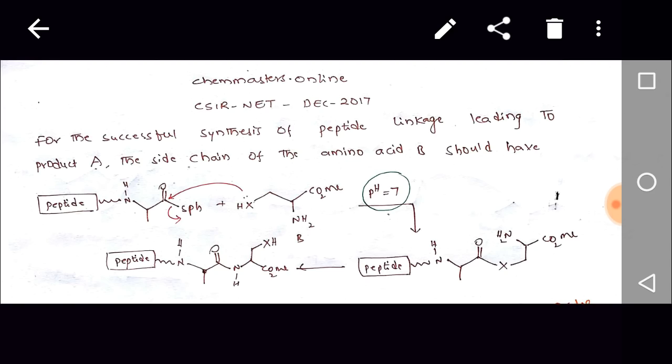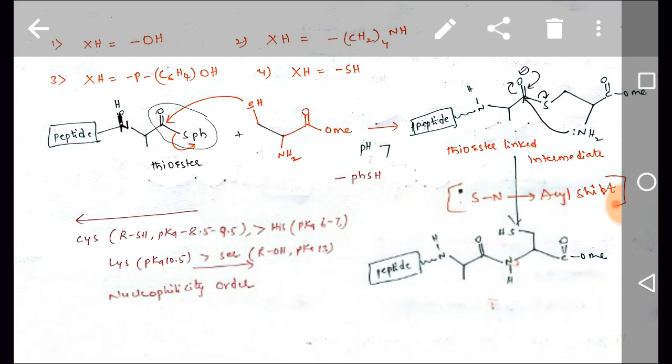We need to find that X in the given options. The first option has OH in the place of XH, second option is CH2NH as a second option, C6H4OH (para) at third option, and SH as fourth option.